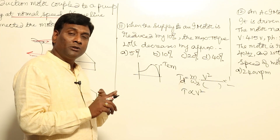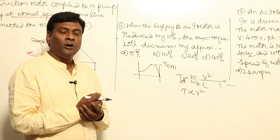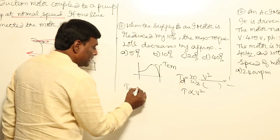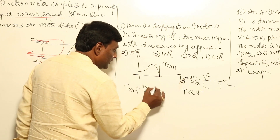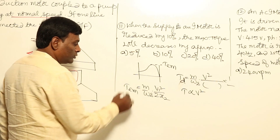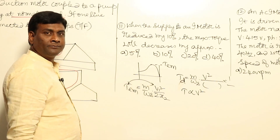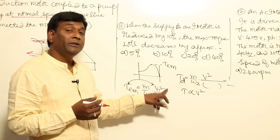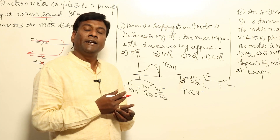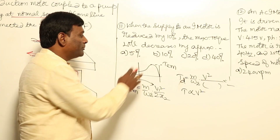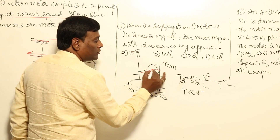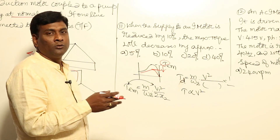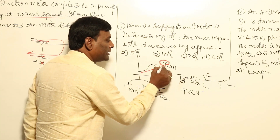The pull-out (maximum) torque Tm = (m / ωs) × V1² / (2X2), so pull-out torque is directly proportional to voltage squared. If I reduce voltage by 10 percent, the supply voltage becomes 90 percent. Then the pull-out torque becomes (0.9)² = 81 percent of the original. So the reduction is 100% − 81% = 19 percent. The pull-out torque will be reduced by 19 percent.